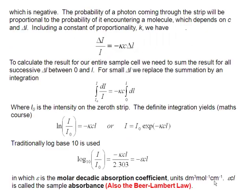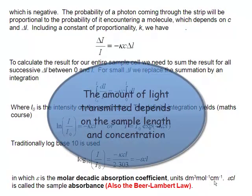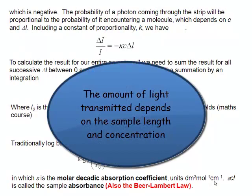So in general, what is the intensity, or the relative light transmitted, going to depend upon? Well, it's going to depend upon whether or not the photon bangs into a molecule as it goes through the sample. If it doesn't bang into a molecule, then it's not going to be absorbed. Therefore, our delta I over I depends on the concentration of the sample. And also, it depends on delta L.